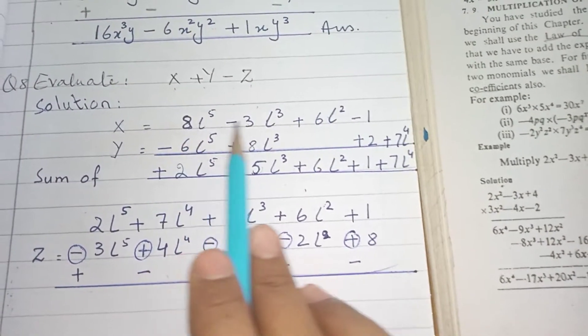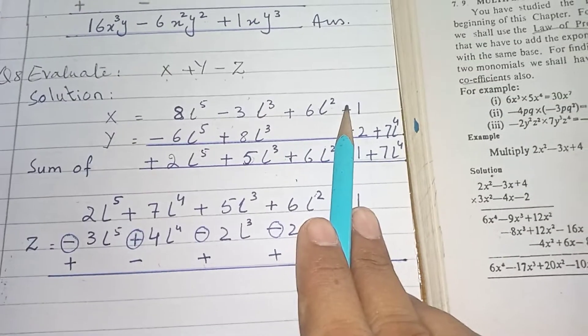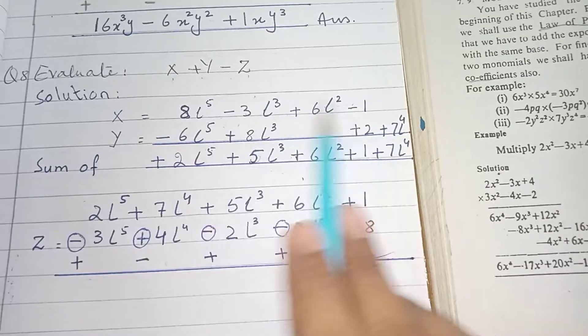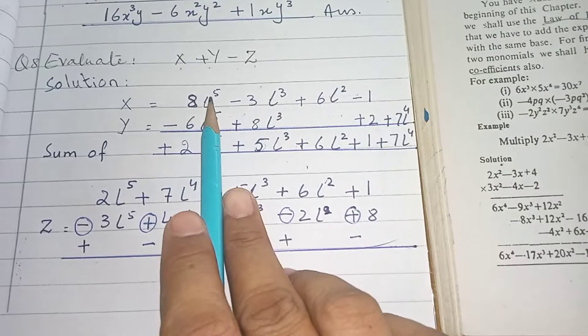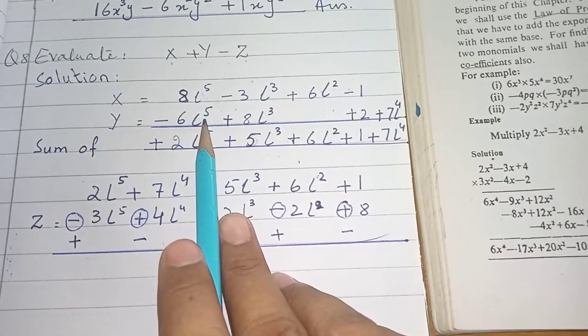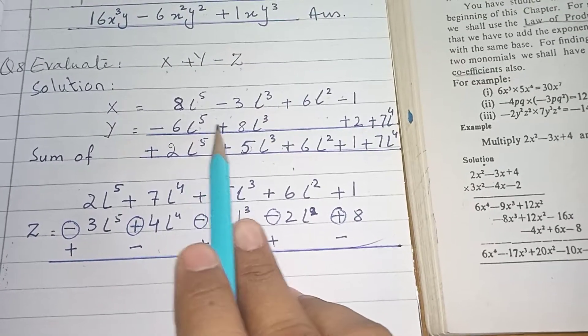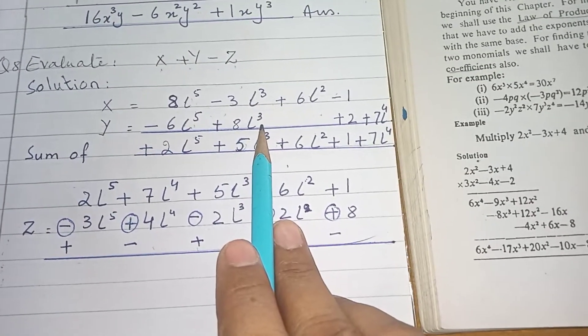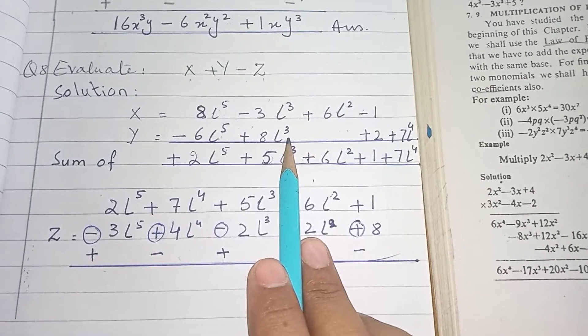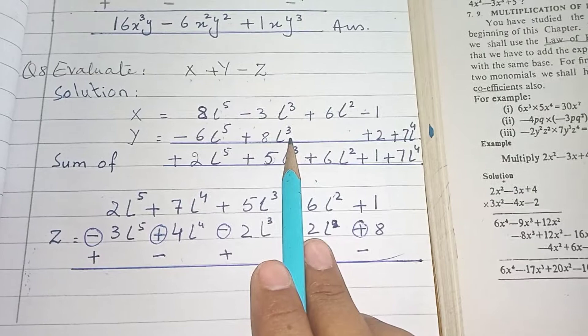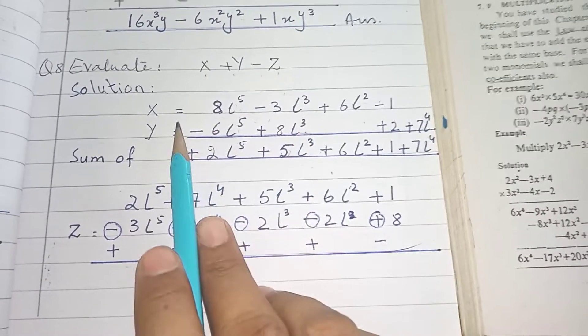First we write down value of X, algebraic expression related to X, algebraic expression related to Y. Same variable and same power, write it in the same column. With sign. In addition girls, no need to inverse the sign.